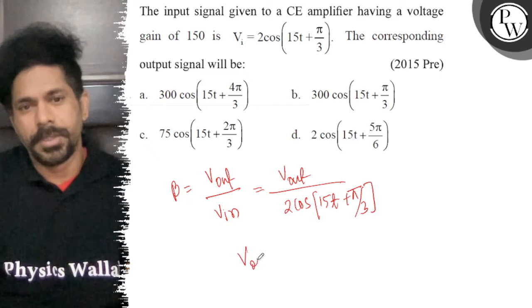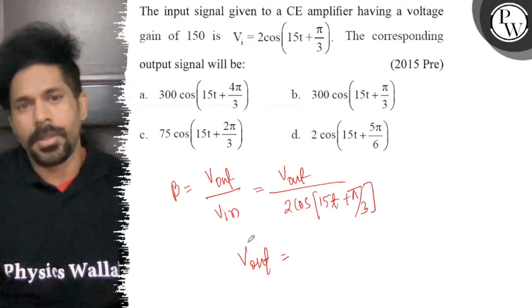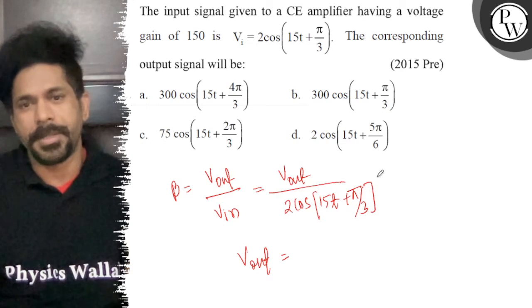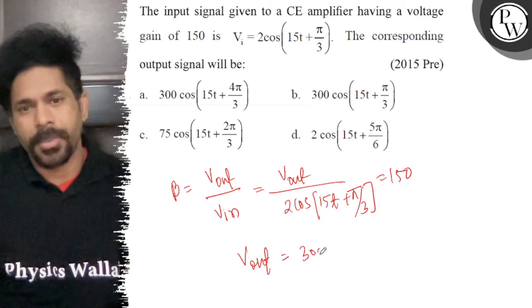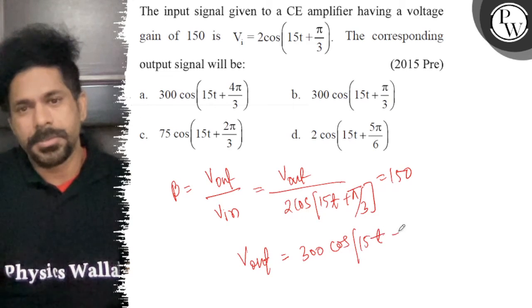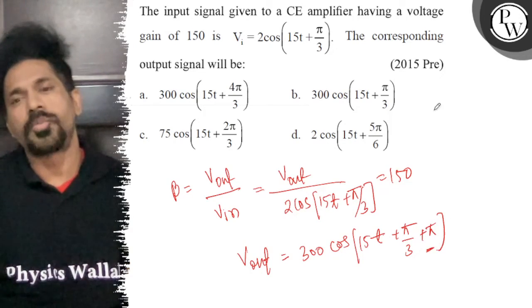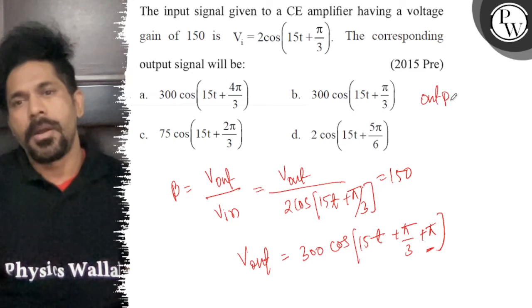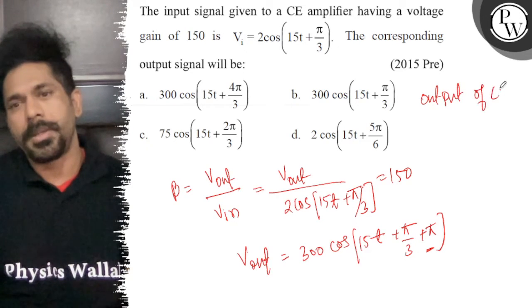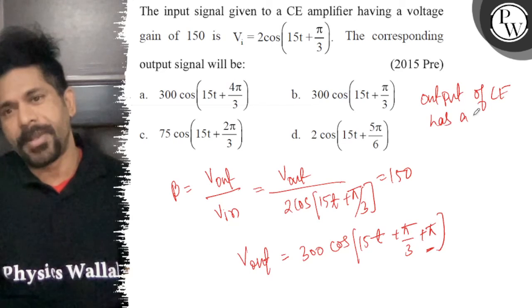So Vout is going to be beta times Vin. That's 150 multiplied, which comes to 300 cos(15t + π/3 + π). The extra π comes because the output of a common emitter has a phase difference.